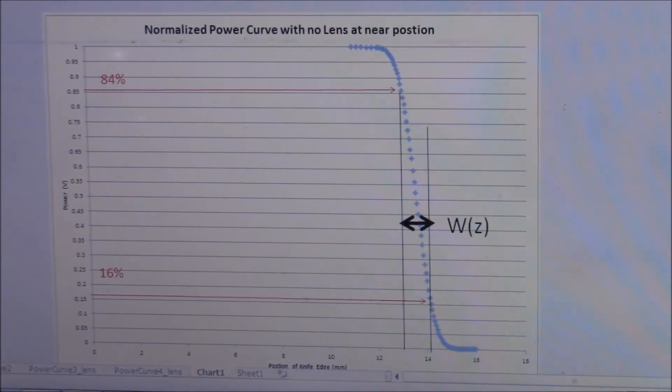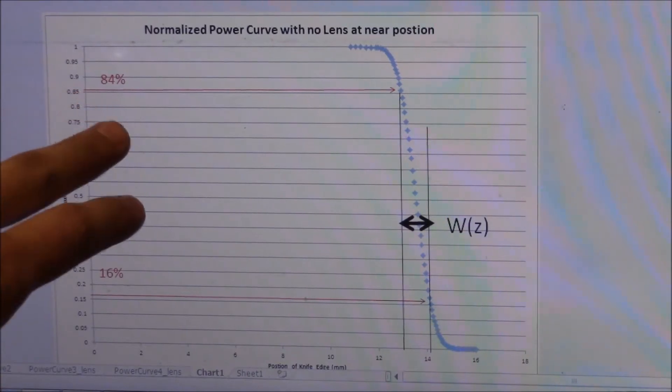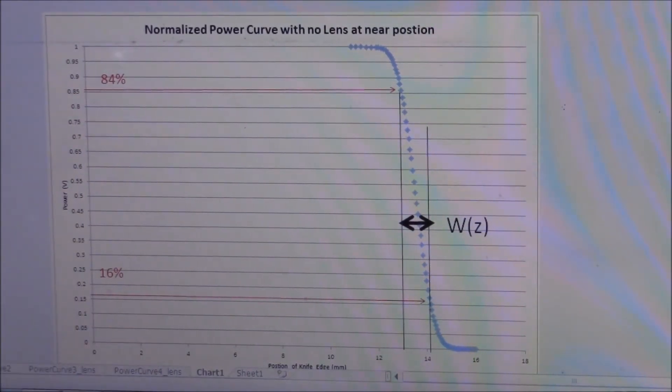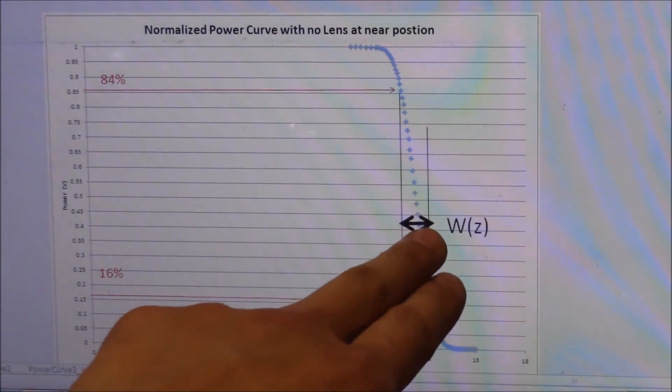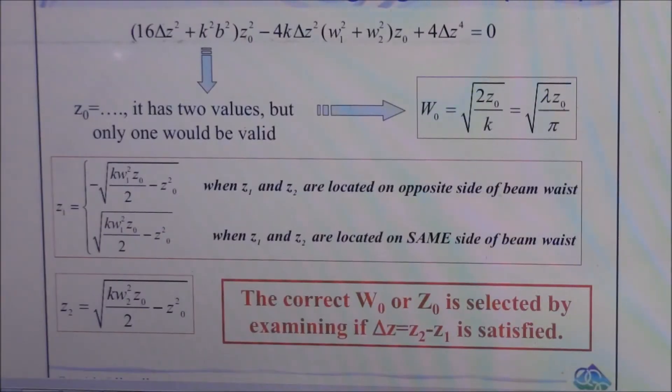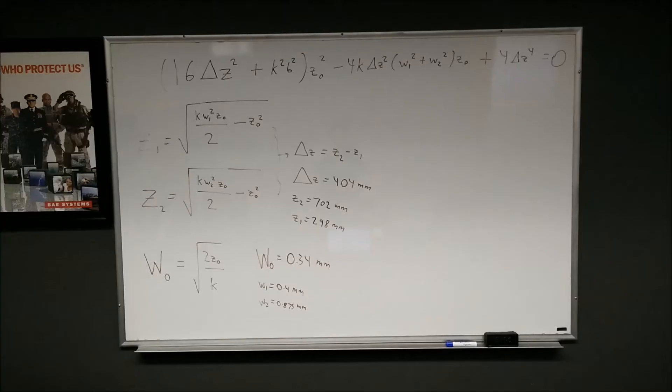Once we gained our beam profile, we were able to find the position where there was 84% of the power in the laser beam and then 16% of the power. And with those two values, we're able to find the position of the knife edge, which then relates to the radius of our beam, and that's denoted W sub Z or W of Z. And then with that, we can go into our algorithm. And here's just the slide that shows all of the things we're solving for. We were able to find the location of our beam waist and the beam waist itself.